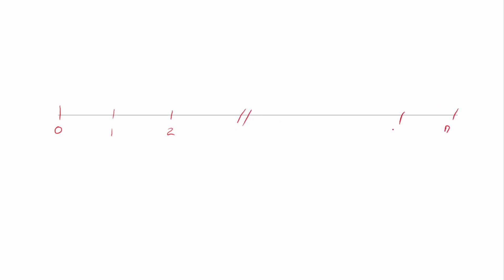For a general timeline, we have time zero, time one, time two, skipping ahead, and our last payment is at time n, with n minus one before it and n minus two before that. Don't stress about this too much — you don't have to memorize it. It's just to help you understand where the formula comes from. As long as you understand the basics of the geometric sequence, you'll be fine.